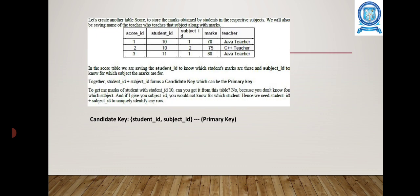In the score table, student ID identifies which student's marks are recorded, and subject ID identifies which subject. Together, student ID plus subject ID forms a candidate key, which serves as the primary key. With only student ID you cannot get the marks because you don't know the subject, and with only subject ID you don't know the student's mark. Hence, student ID plus subject ID together uniquely identify any row.